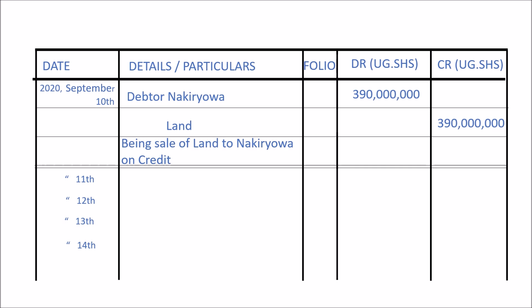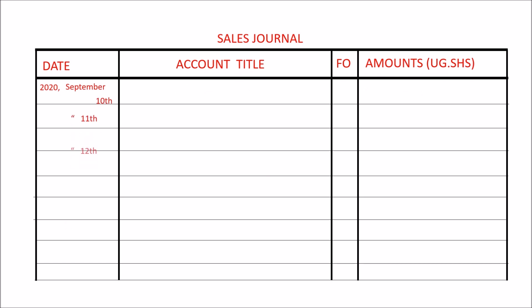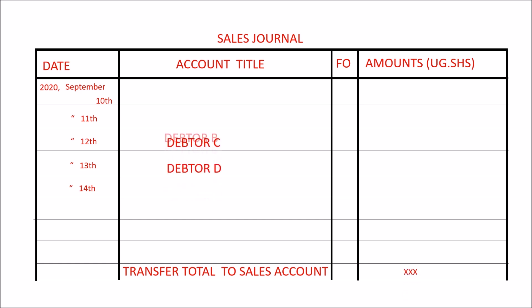There are many types of journals; however, I will highlight the most common ones. We have the sales journal, sometimes known as the sales day book. Its purpose is to record credit sales on a daily basis. The total of sales in the sales journal is credited in the sales account in the general ledger, and the individual debtors' accounts are debited with their respective amounts in the sales ledger. I will be able to illustrate this further in a later session.